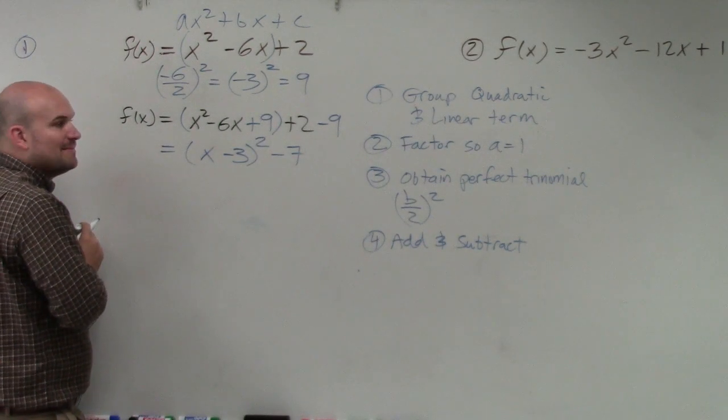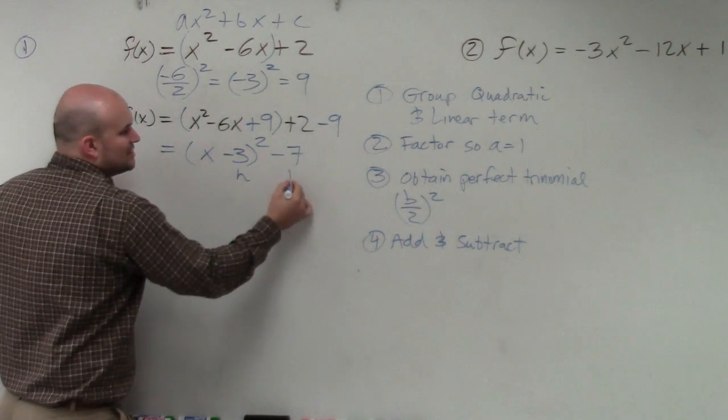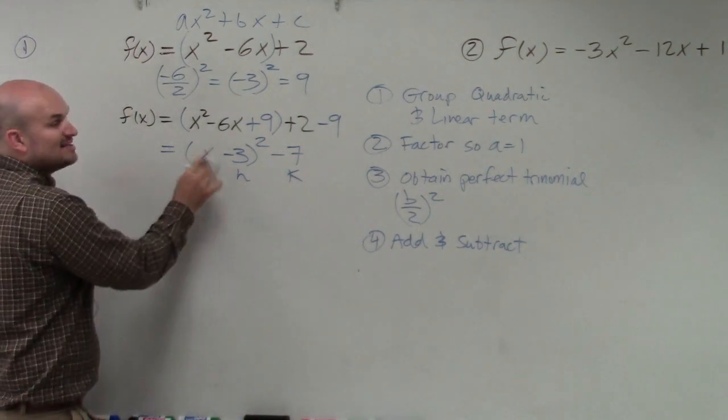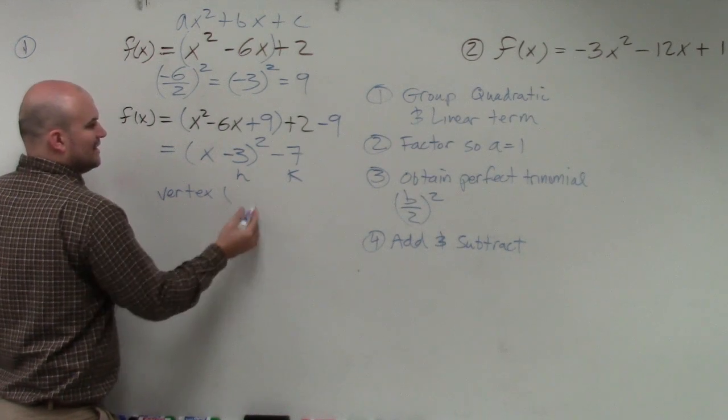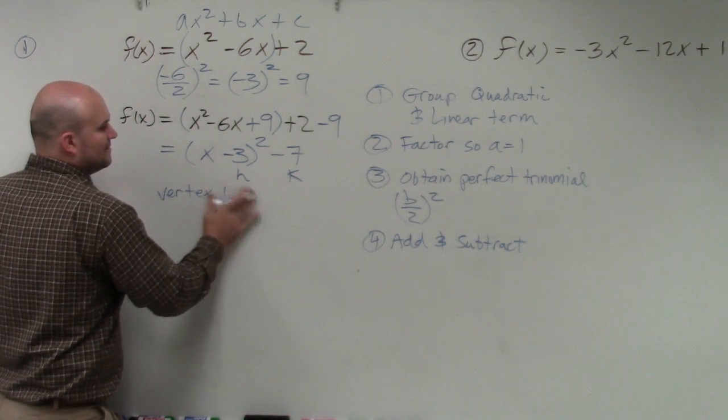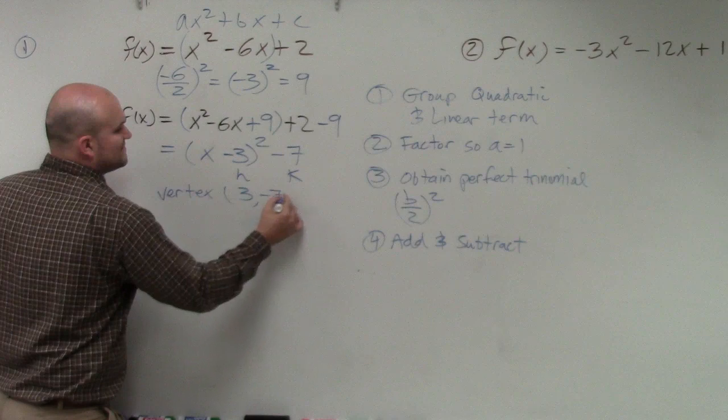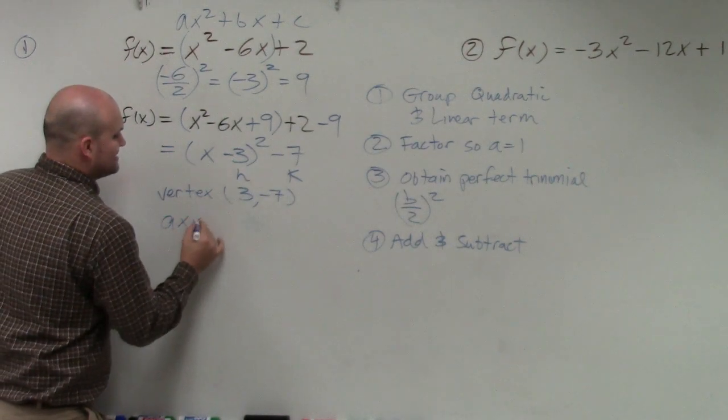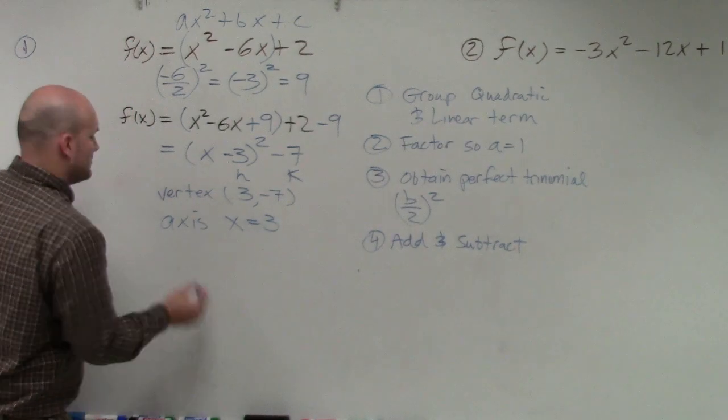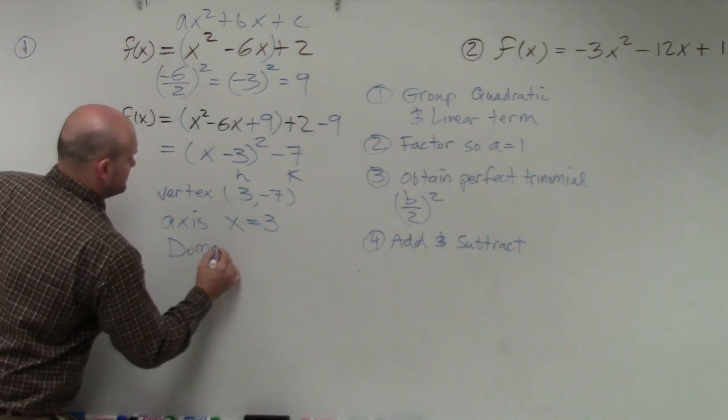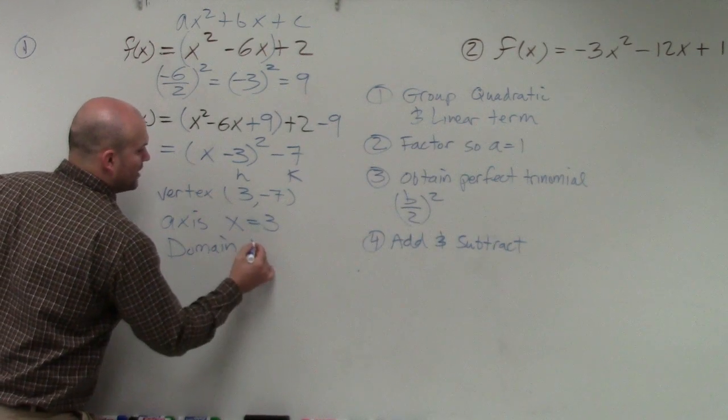Now, can I identify my vertex? h comma k. Remember, it's x minus h. So my vertex is now going to be 3 comma negative 7. My axis of symmetry is x equals h. So that's x equals 3.